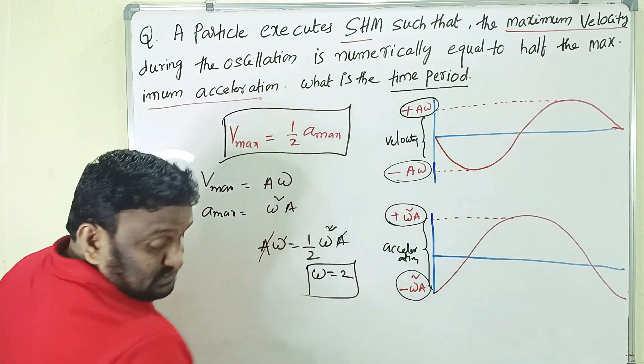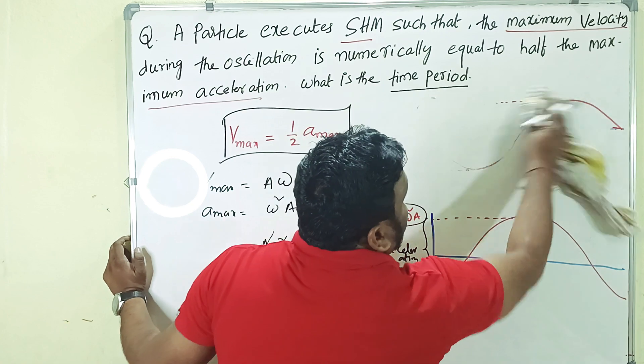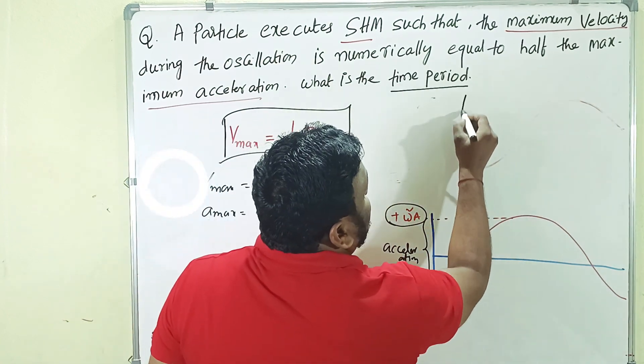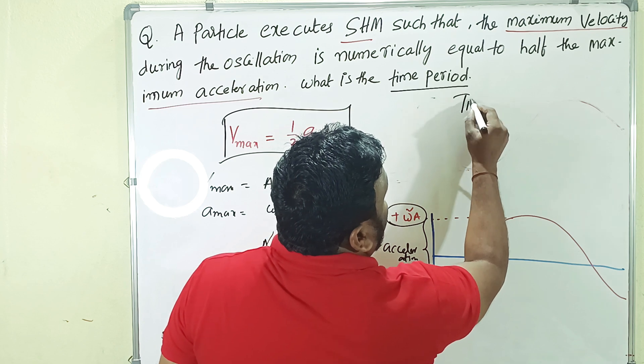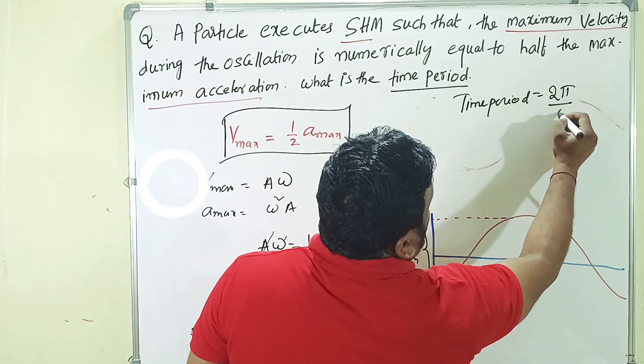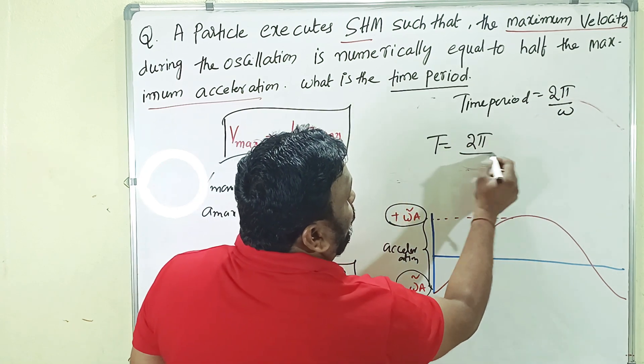So what is the time period? So what you want to find out, students? We want to find out the time period. So simply here, what is the expression for time period? This is simple. Time period is equals to, we can write, 2π by omega. T is equals to 2π by omega.